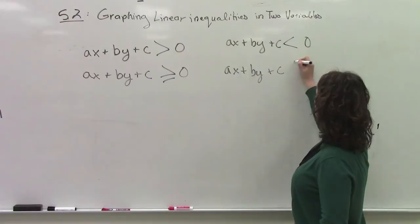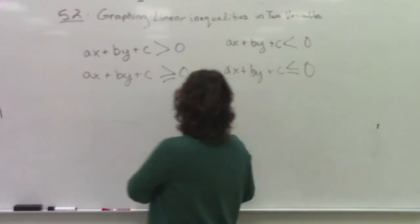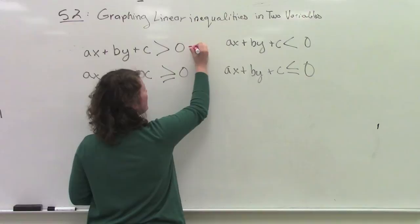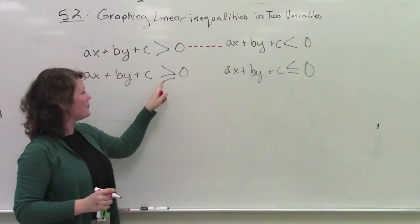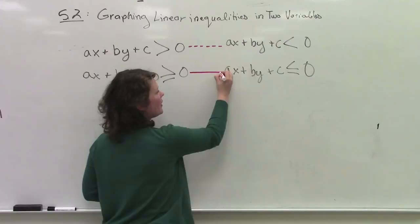Whenever we see this right here, so it doesn't include the line, we're going to have dotted lines. Whenever we see something that includes the line, what we're going to do is we're going to have a solid line. Those are important things to think about when we're doing the examples. You're going to have a solid line.